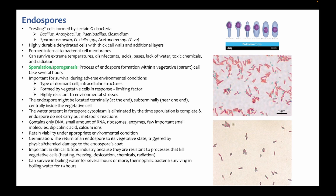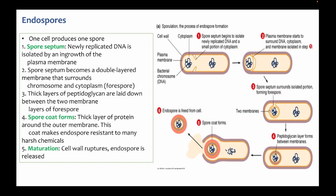Endospores can survive for a long time — they can survive boiling water for several hours, and thermophilic bacteria endospores can survive 19 hours in boiling water. The formation of endospores begins with DNA replication. Once there are two copies of DNA, one chromosome goes to each side, and then the spore septum forms to initiate endospore formation. The spore coat contains dipicolinic acid and calcium ions to strengthen the structure and prevent it from drying out.